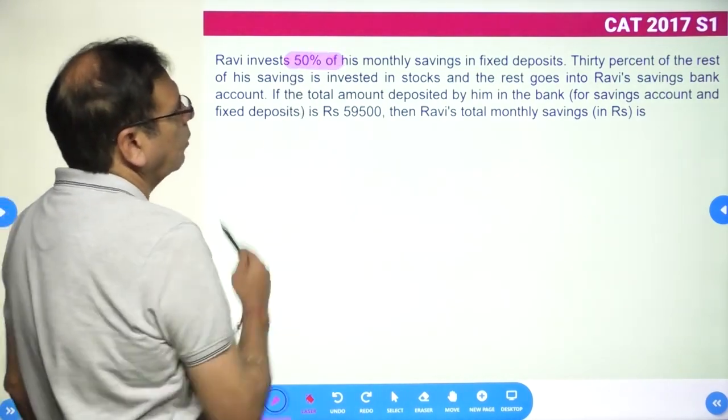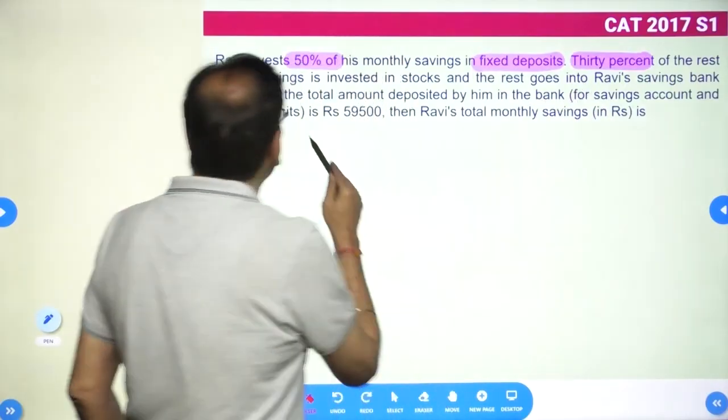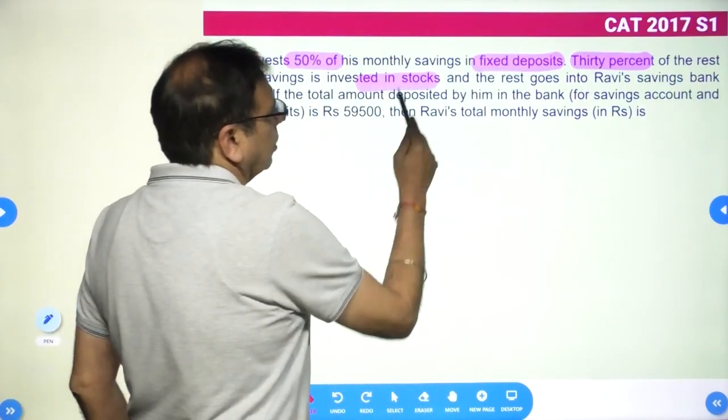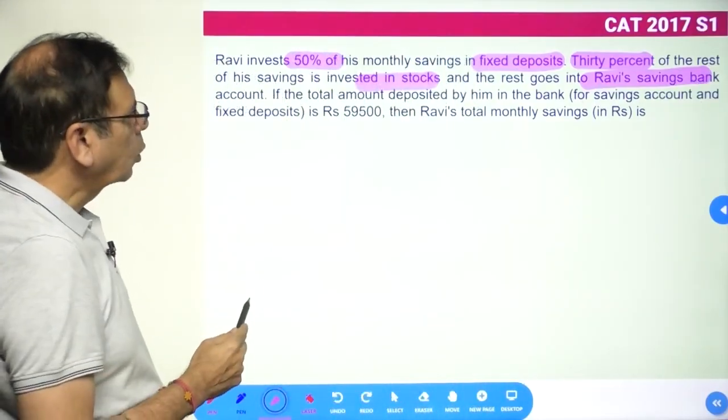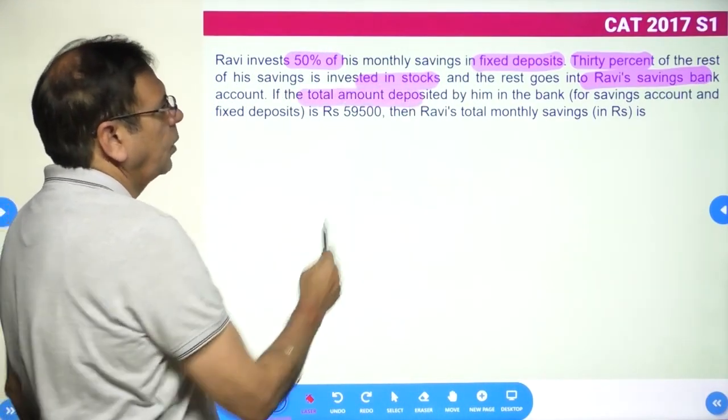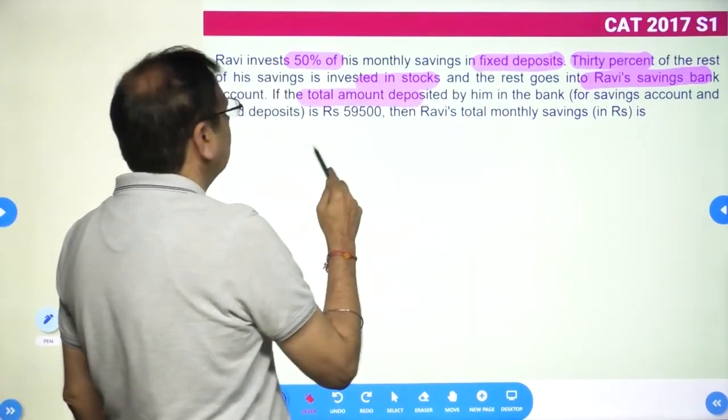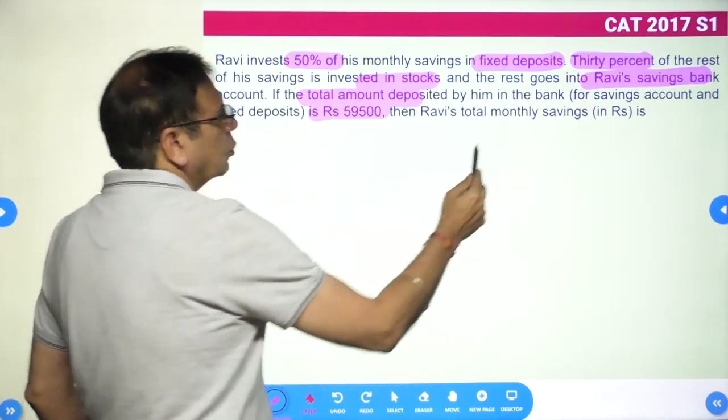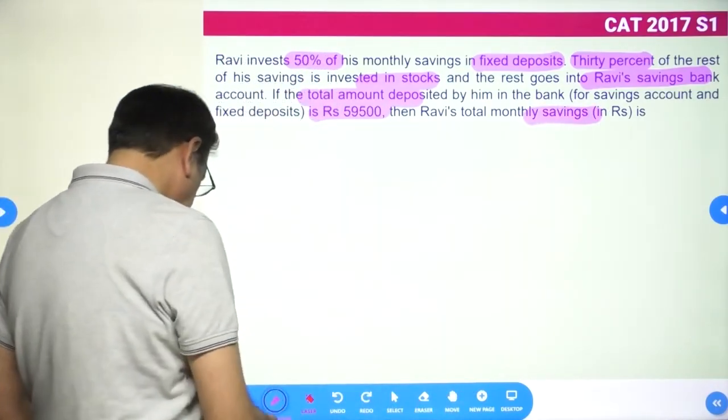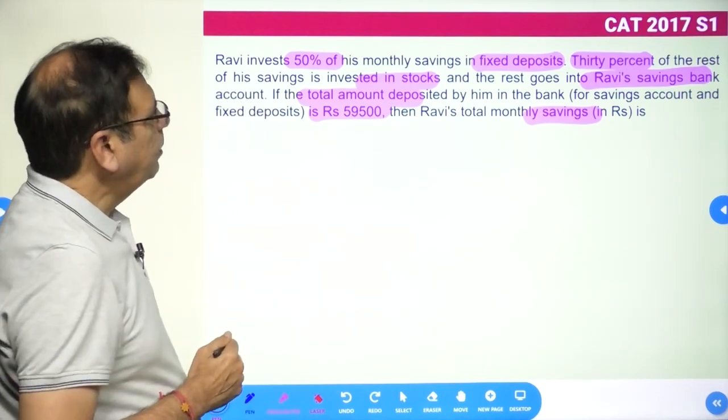Ravi invests 50% of his monthly savings in fixed deposits, 30% of the rest of his savings is invested in stocks, and the rest goes into a savings bank account. If the total amount deposited by him in the bank for savings account and fixed deposit is 59,500, then Ravi's total monthly savings is how much?